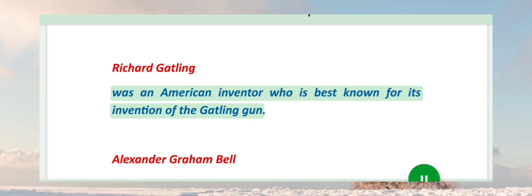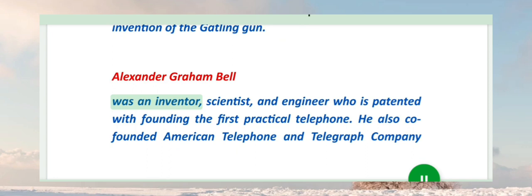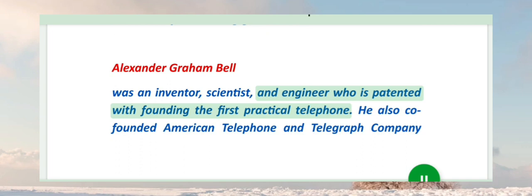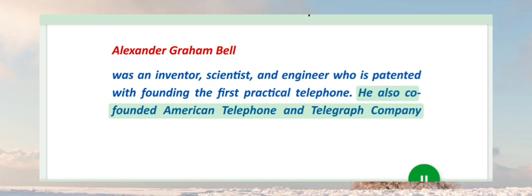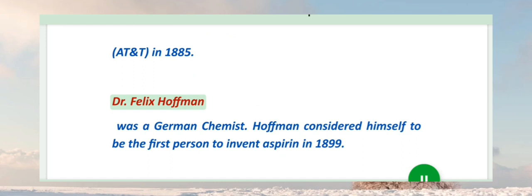Richard Gatling was an American inventor who is best known for its invention of the Gatling gun. Alexander Graham Bell was an inventor, scientist, and engineer who was patented with founding the first practical telephone. He also co-founded American Telephone and Telegraph Company AT&T in 1885.